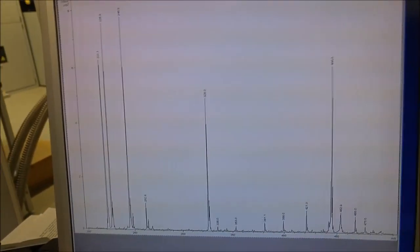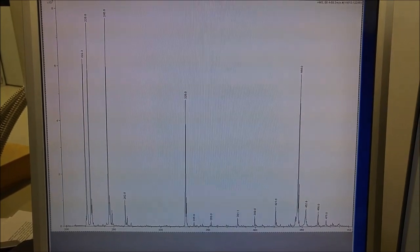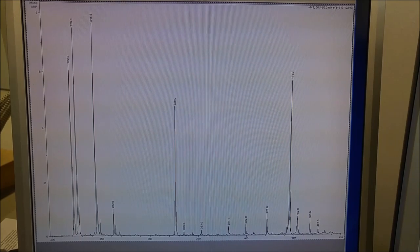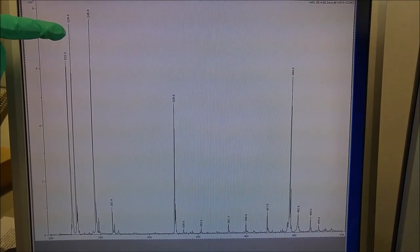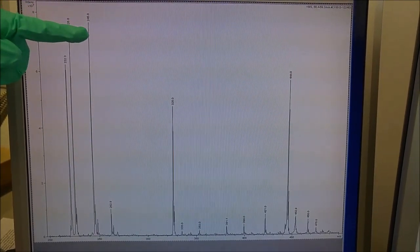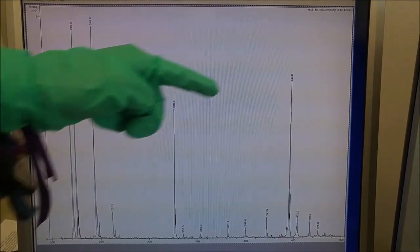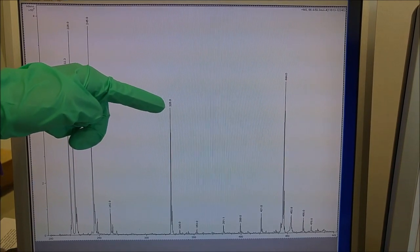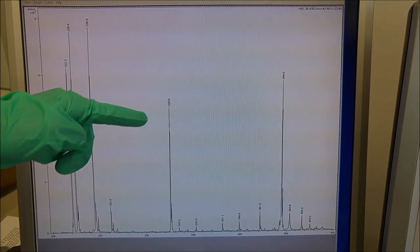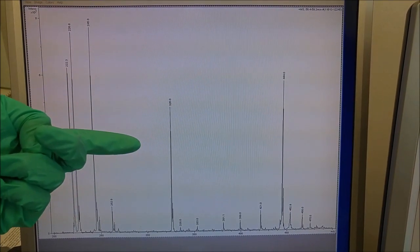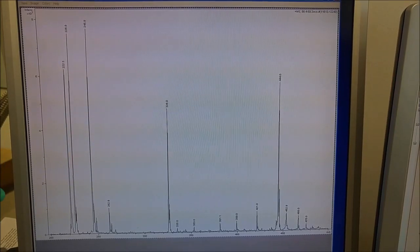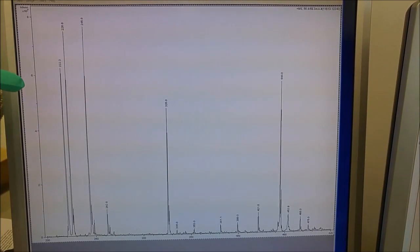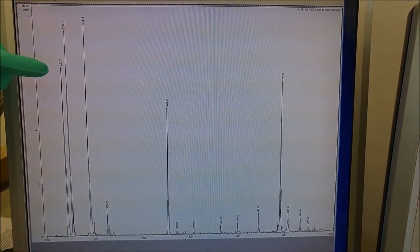And if we average a specific time point of the total ion chromatogram, we obtain a mass spectrum where we can see the trans-cyclooctene as a peak here, the tetrazine as a peak here, the final product as a peak here, a product here which is a fragment of the final product being formed in the ionization process, and also a doubly charged molecule of the product being manifested as a peak here.